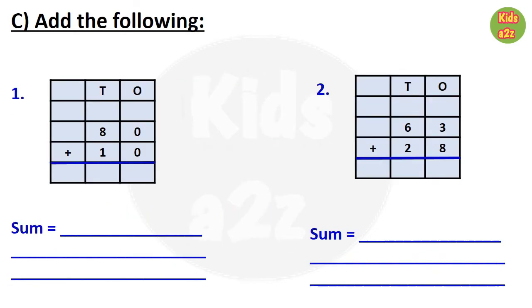Here kids need to do addition. First, they need to start with ones column and then they need to add tens column. So here 0 plus 0 equals 0, so they need to write 0 under ones column, and then under tens column they need to write 9. So the answer is 90.